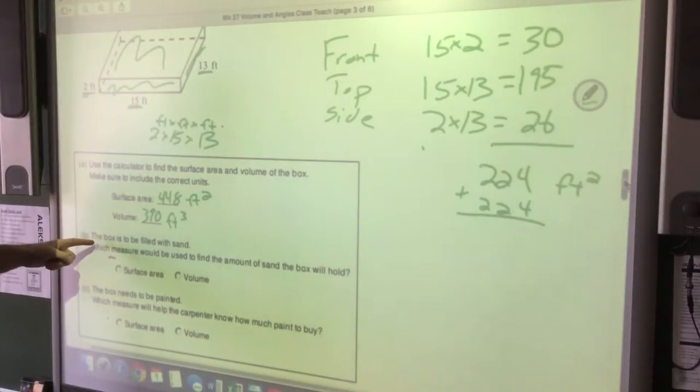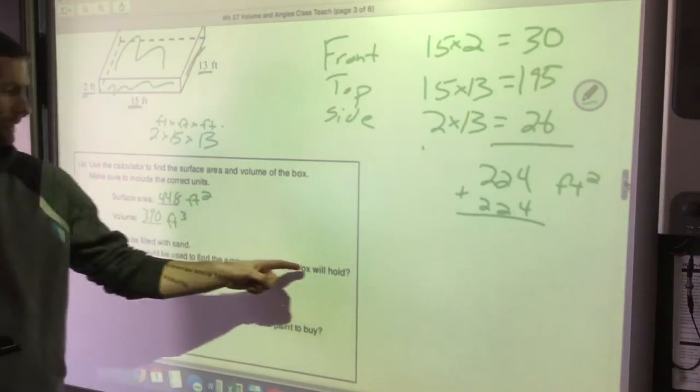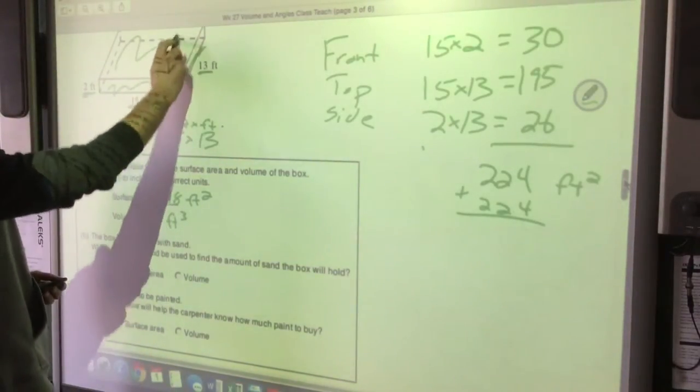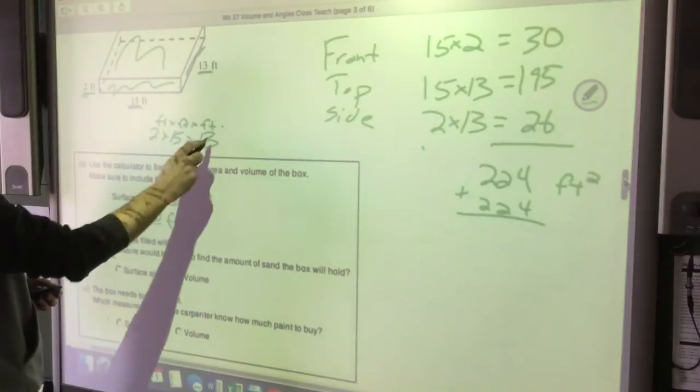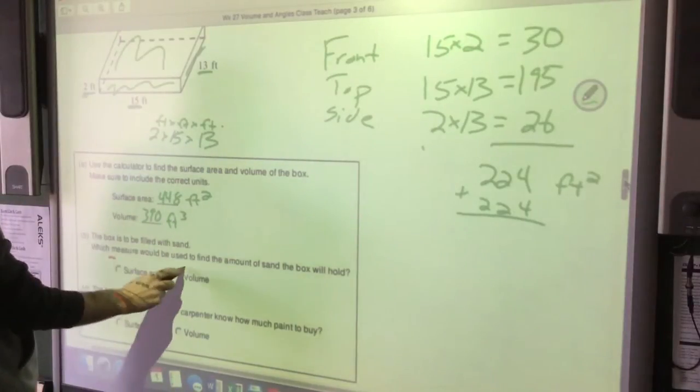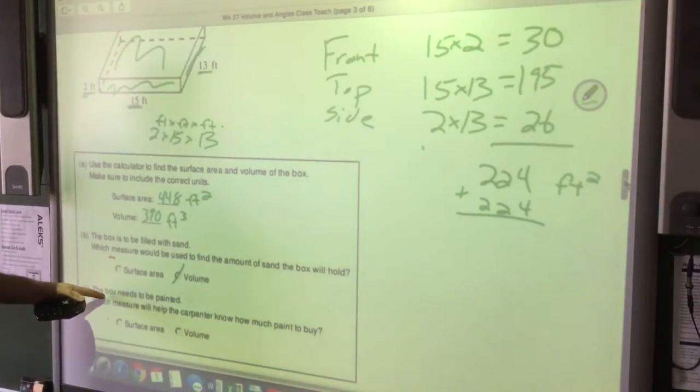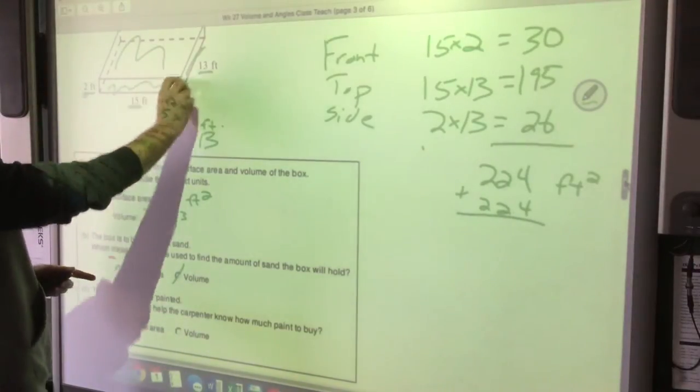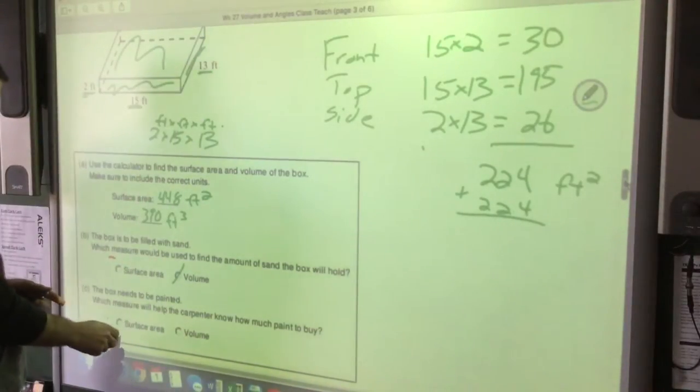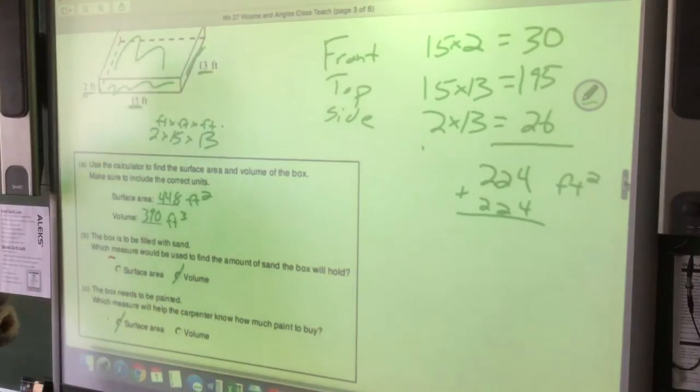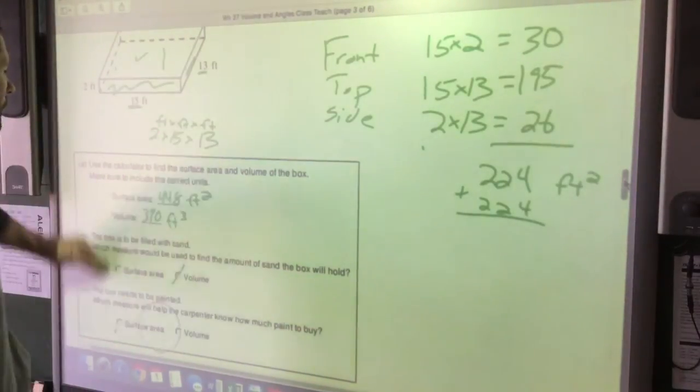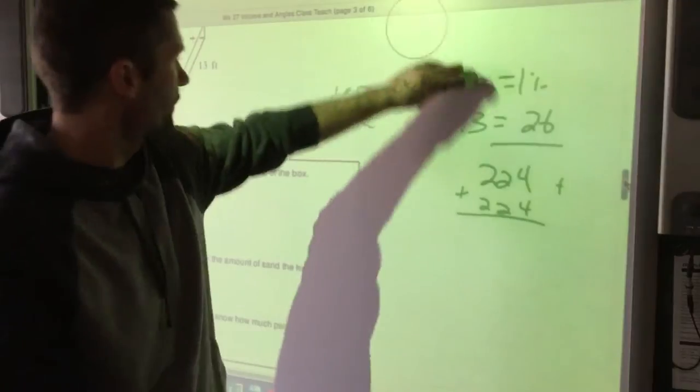Okay, the box is to be filled with sand. Which measure would be used to find the amount of sand the box will hold? Okay, so we're putting sand on the inside, we're filling it all up. So that's definitely volume. The box needs to be painted. We're not just dumping paint into the inside, we're painting around the outside. So that's going to be surface area. Alright, so that's distinguishing between surface area and volume. Be careful with your labels.